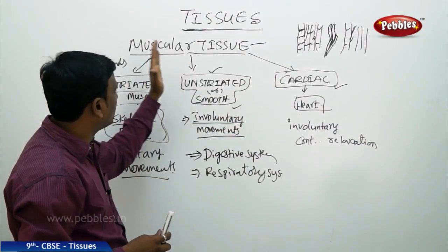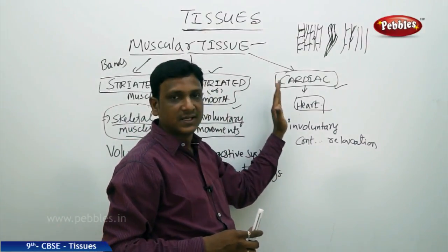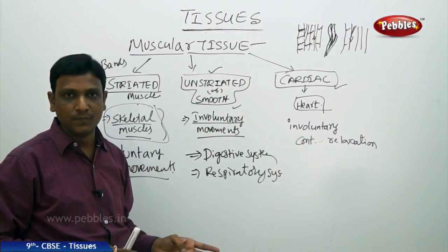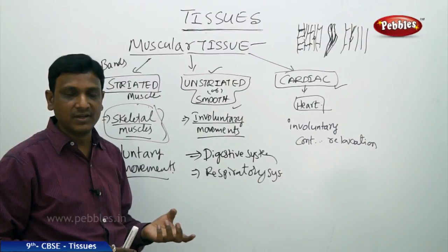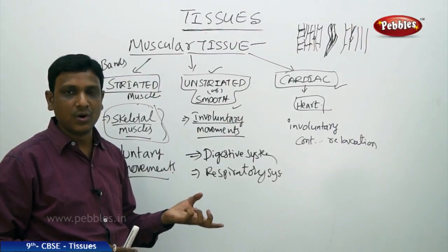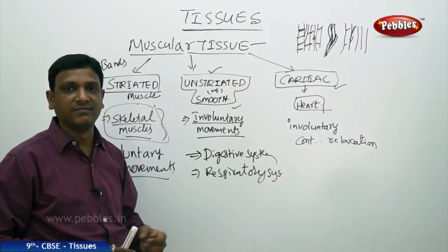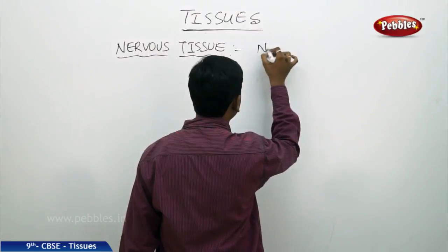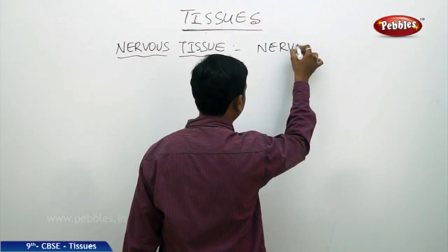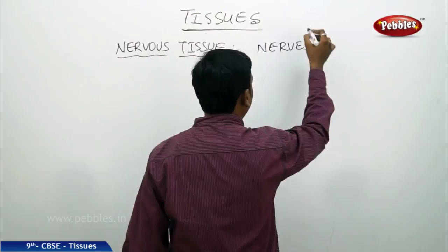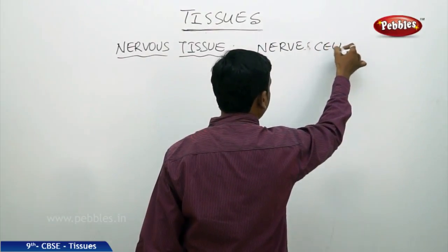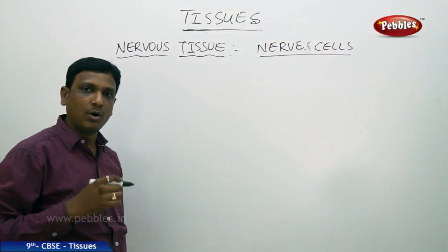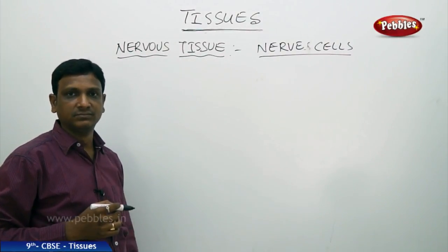So muscular tissue is of three kinds: striated muscle, unstriated muscle, and cardiac muscle. That covers muscular tissue. We have now seen epithelial tissue, connective tissue, and muscular tissue. The next animal tissue to study is nervous tissue, which is made up of specialized cells called nerve cells. The nervous cells make up the nerves.